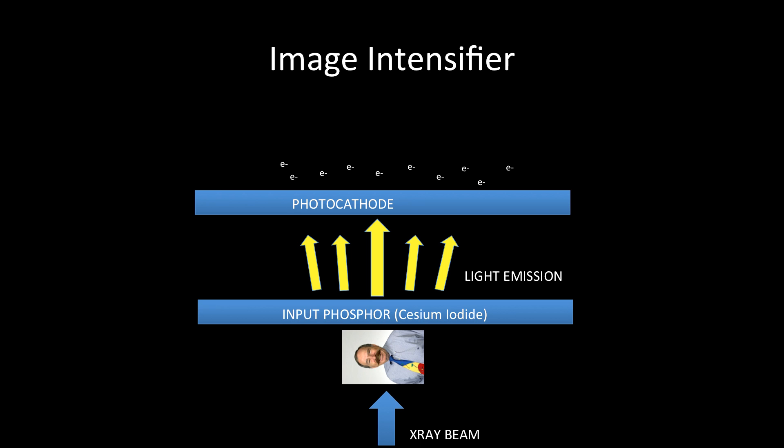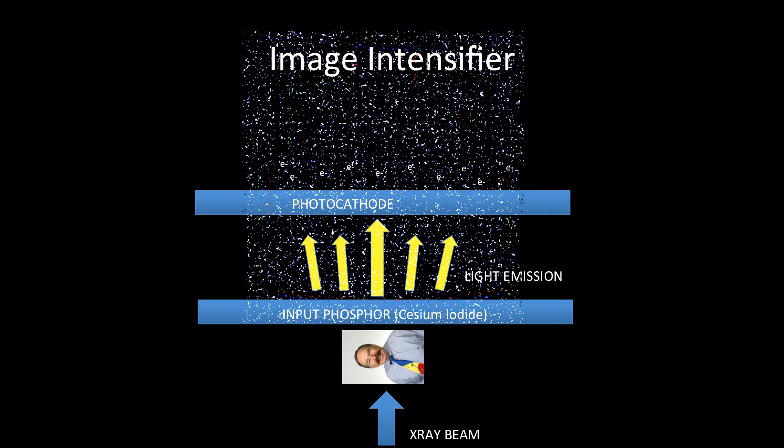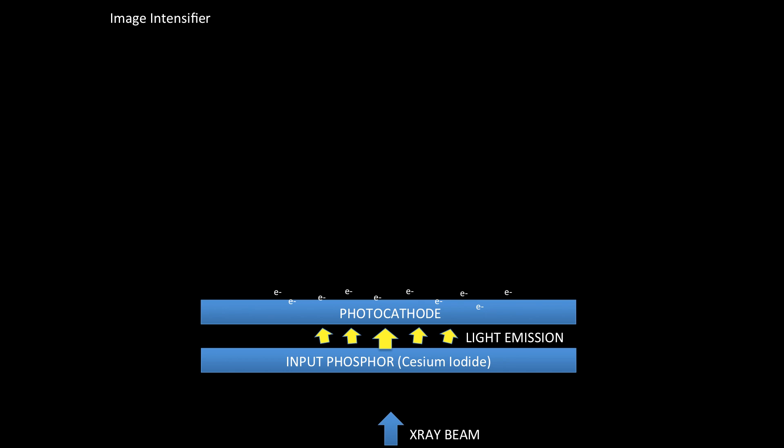And this is the overview of our image intensifying tube. We have the first layer in blue here that represents the input phosphor, then the red layer represents the photocathode.